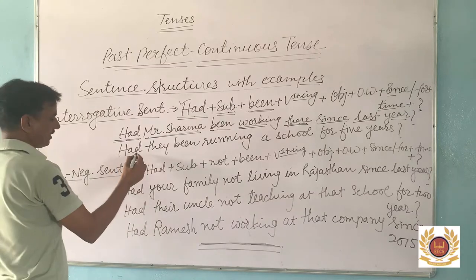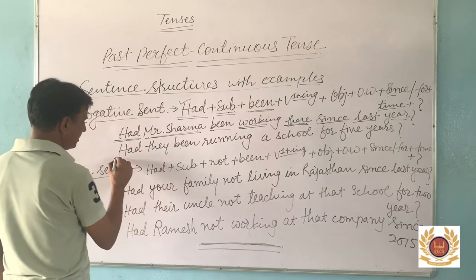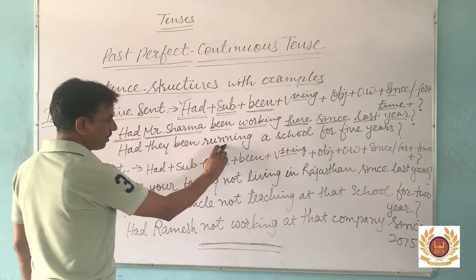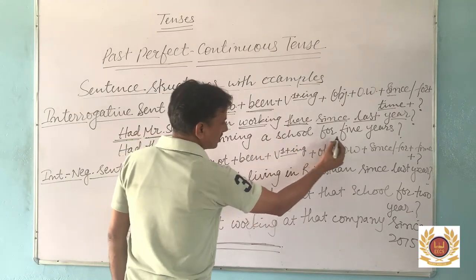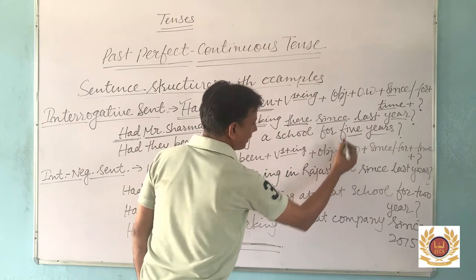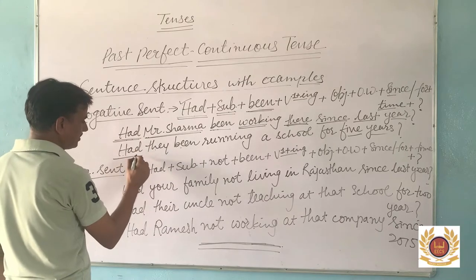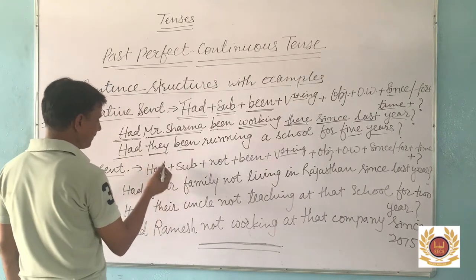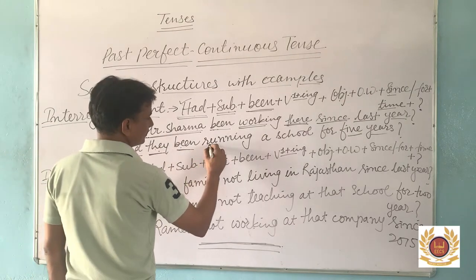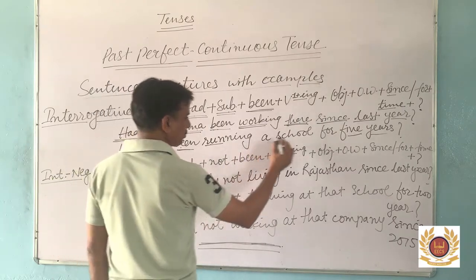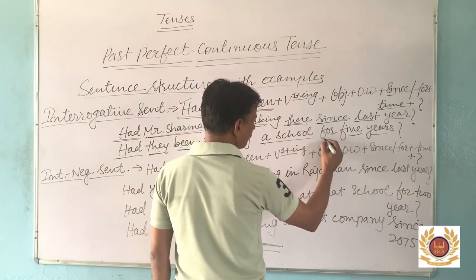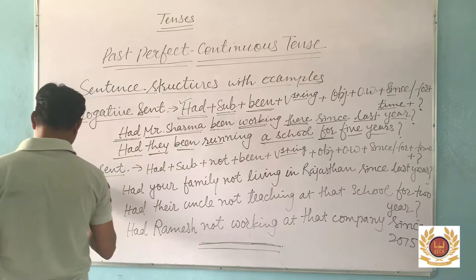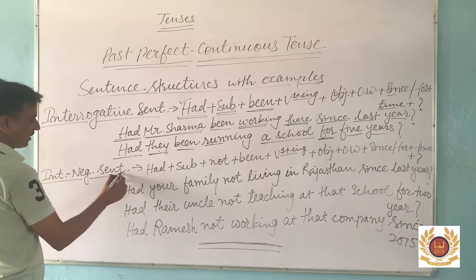Next interrogative example: 'Had they been running a school for 5 years?' In this sentence, it is being asked whether they were running a school or not — the action of running a school was going on in the previous time. 'Had' is the helping verb to start with, 'they' is the subject, and 'been' follows. Between 'had' and 'been' we have set the subject 'they'. First form of verb with '-ing' is 'running', 'a school' is the object, 'for' is the adverb because '5 years' is a period of time, and a question mark.